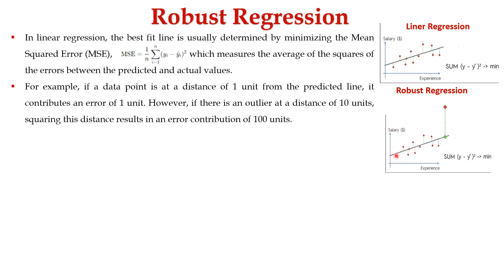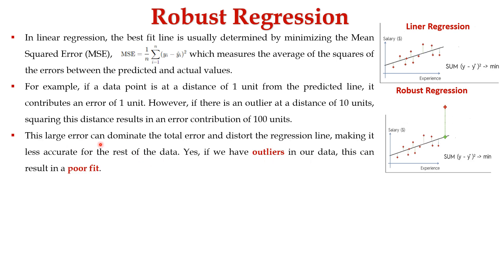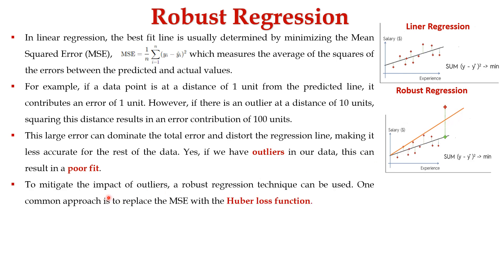Data points at a distance of 1 unit from the predicted line contribute an error of 1 unit. If we consider an outlier at a distance of 10 units, squaring this distance results in a contribution of 100 units — equivalent to 101 units of error from the data points. This large error can dominate the total error and distort the regression line, making it less accurate for the rest of the data and resulting in a poor fit.